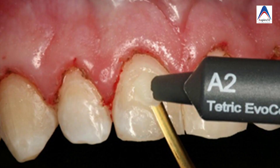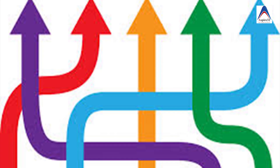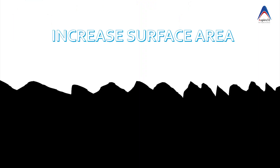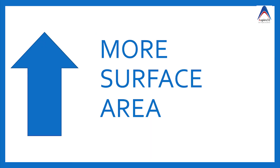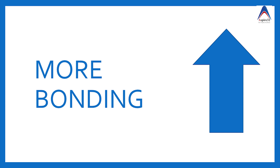What is the reason for increased bond strength when you etch the tooth structure? The first reason mentioned in the literature is that when you apply an etchant to the tooth structure it makes it irregular and leads to an increase in surface area. And if the surface area increases, then the bonding agent will have more surface to bond to, which increases the bond strength.